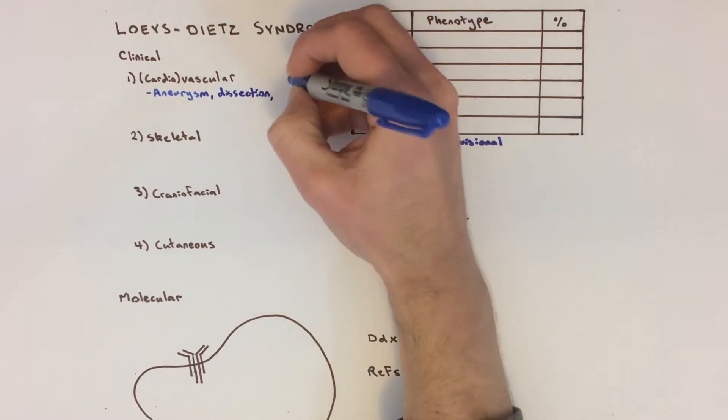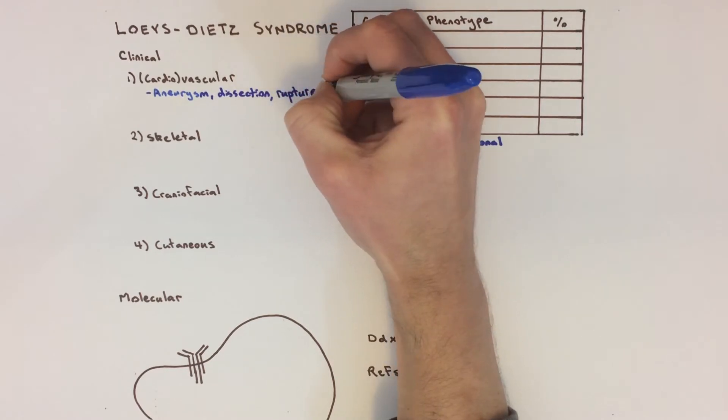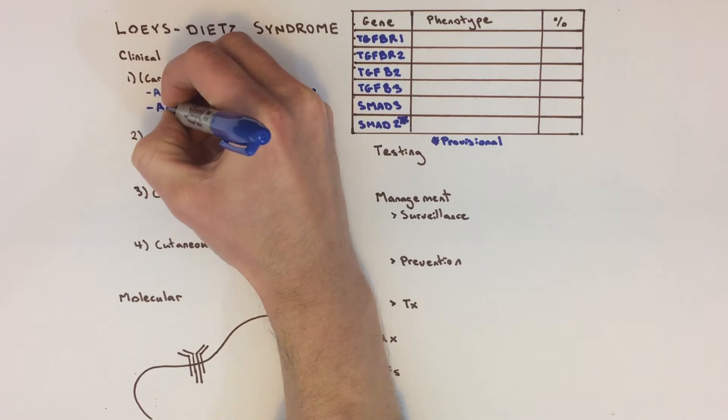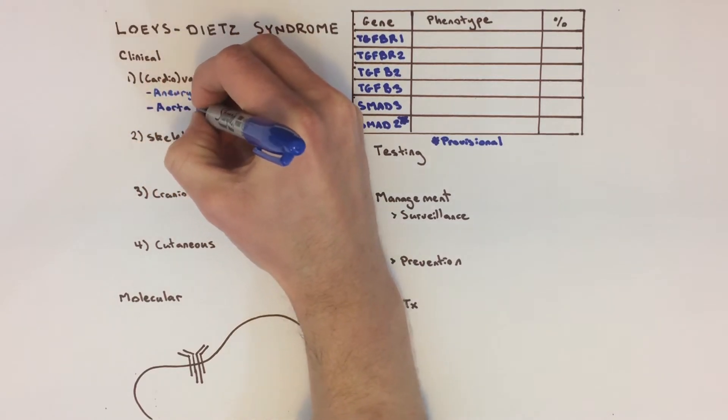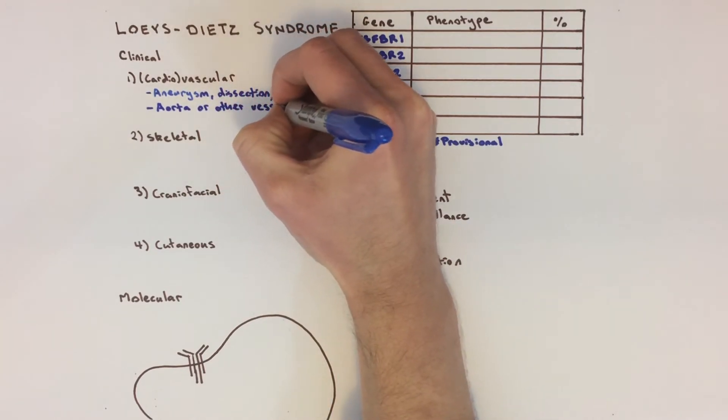Any other artery can be affected too. Arteries in the head and neck can show something called tortuosity, which is where they follow a more winding path than normal. There is a particularly high risk for arterial problems during and just after pregnancy, which seems to be caused in some part by the hormone oxytocin.